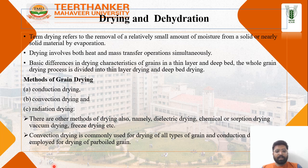Other methods of drying include dielectric drying, chemical or suction drying, vacuum drying, and freeze drying. Convection drying is commonly used for drying grain.